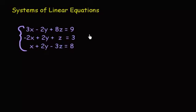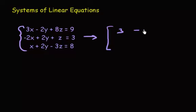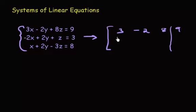Alright, so first step, let's write this into our augmented matrix. Remember, an augmented matrix means taking the coefficient of every variable and writing it into your matrix. So we have three, negative two, eight, and nine. We'll have this vertical line here — it's kind of like an equal sign. It separates the variables from our constants: nine, three, and eight.